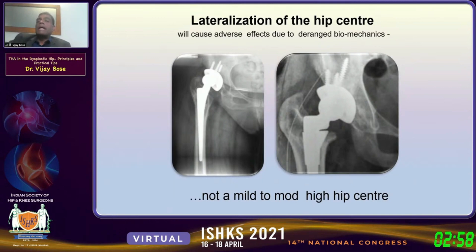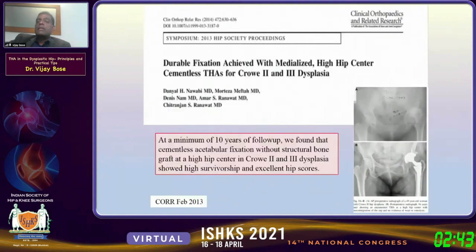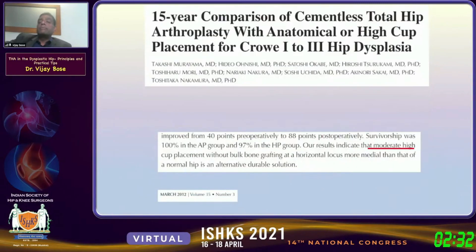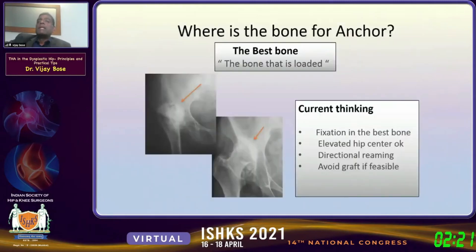We now know it's not the high center that matters, but lateralizing the socket is bad news — that is universally accepted. You can keep the socket a little high; aiming for a mild to moderate high hip center makes surgery simpler and leaves the socket in the best available bone. Two landmark papers confirmed this: the Ranawath group published excellent long-term results of high hip centers at 10-year follow-up, and a Japanese paper showed very good results with a moderate high hip center at 15-year follow-up.